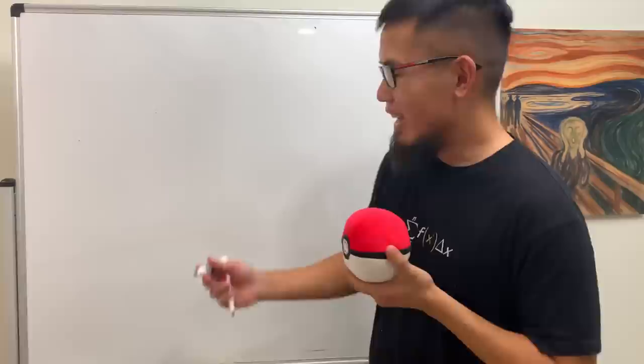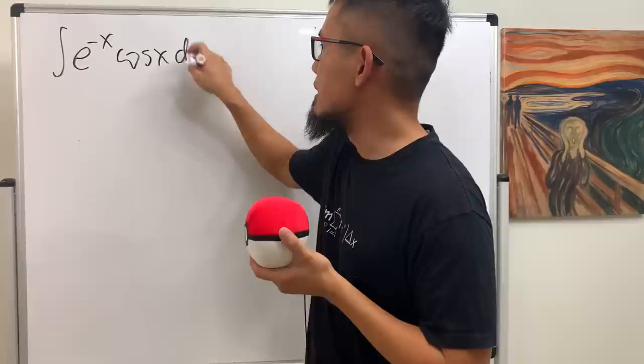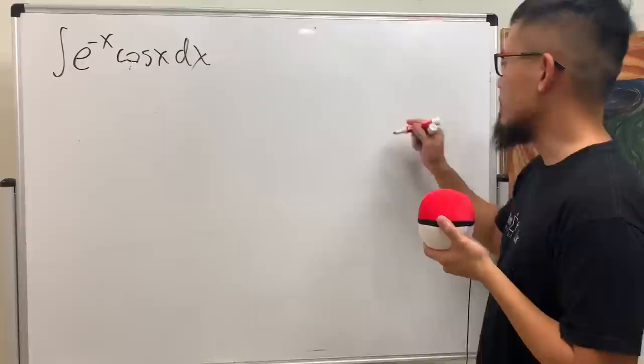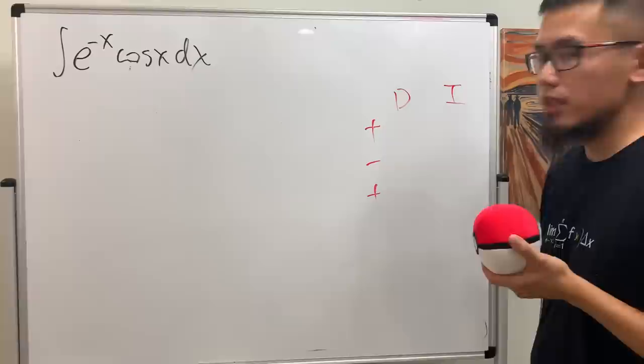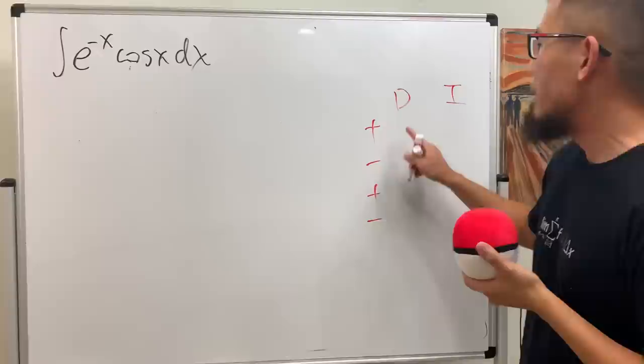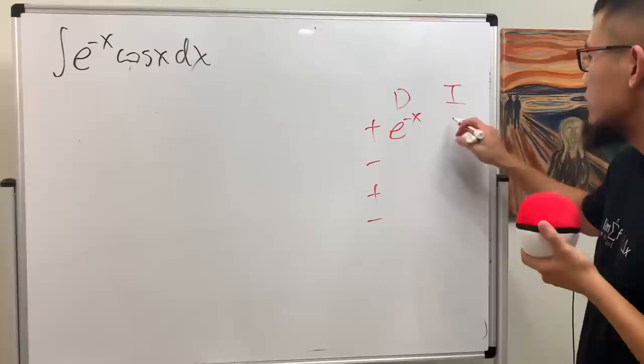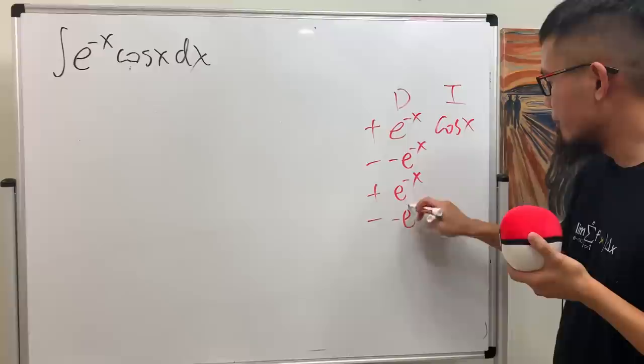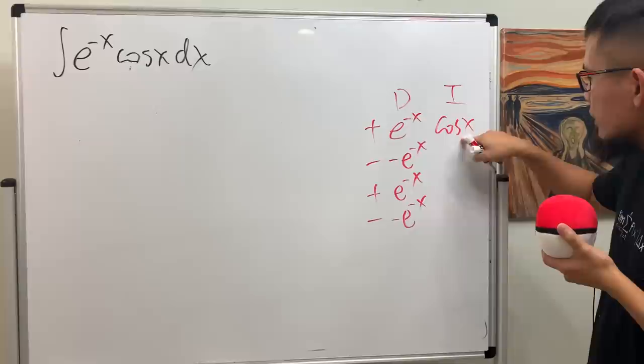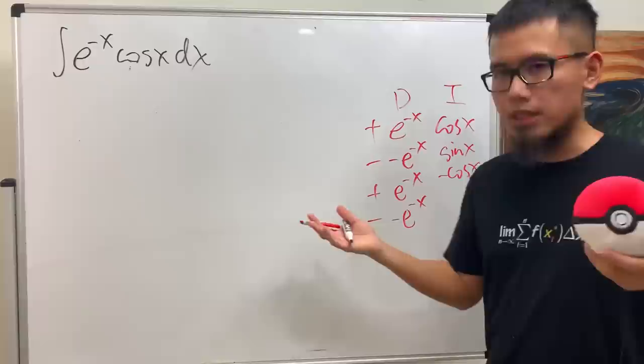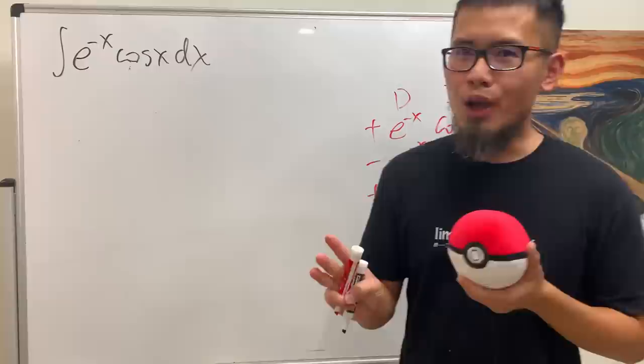The third stopping condition: consider the integral of e to the negative x times cosine x dx — this is the repeating situation. I put D and I columns with plus, minus, plus, minus. I'll differentiate e to the negative x and integrate cosine x — you can swap them, it doesn't really matter. Integrating cosine gives positive sine x, then negative cosine x. We can integrate as many times as we'd like, but you need to have a sense of danger.